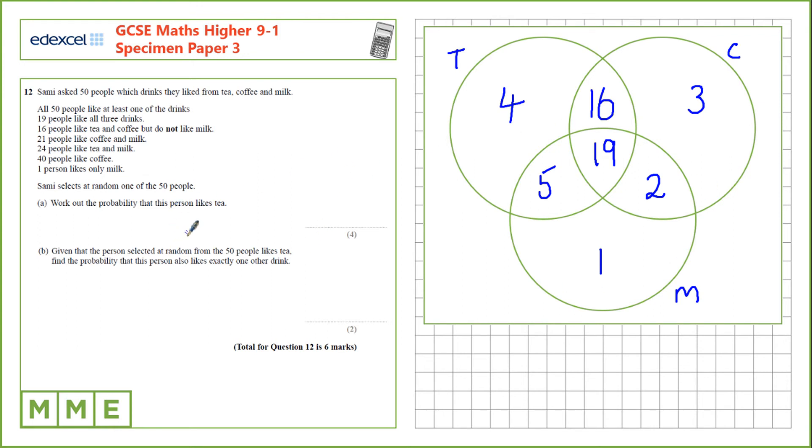Work out the probability that a person likes tea. So we need to add up the total in here, all of these people like tea, which is 44 people. And if you want that as a probability we need to divide by the total number of people, 50.